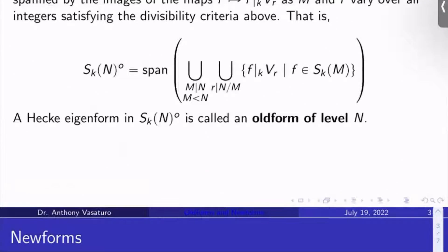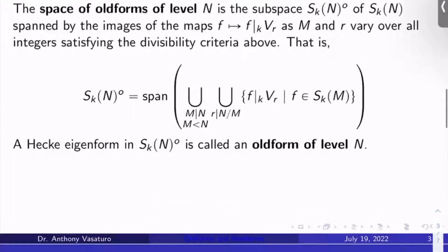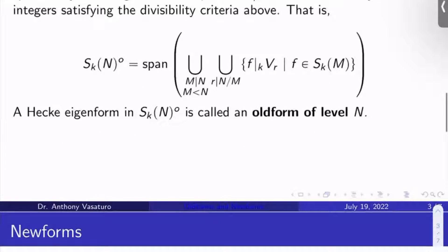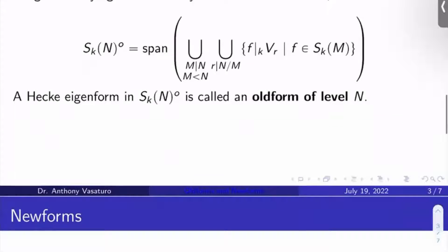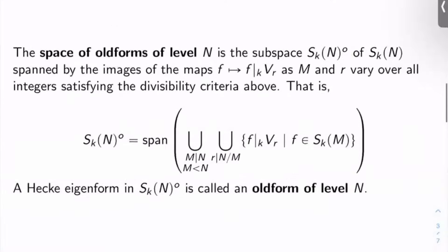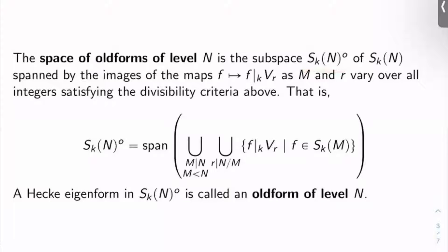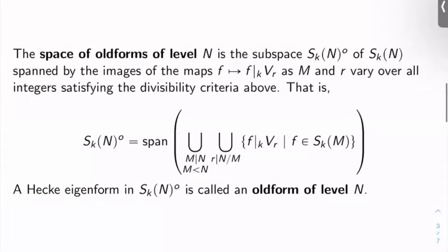And so a fancy way of saying this is that S_K(N)^O is the span of the union over all M properly dividing N of the union over all r dividing N over M of the sets f bar K V_r, where f is in S_K(M). And here's where things get, you have to remember this definition that I'm about to give you because otherwise you're going to think an old form is just anything in S_K(N)^O when it's not. A Hecke eigenform in S_K(N)^O is called an old form of level N. So we're not just going to call generic elements of S_K(N)^O old forms. We're only going to call Hecke eigenforms old forms.